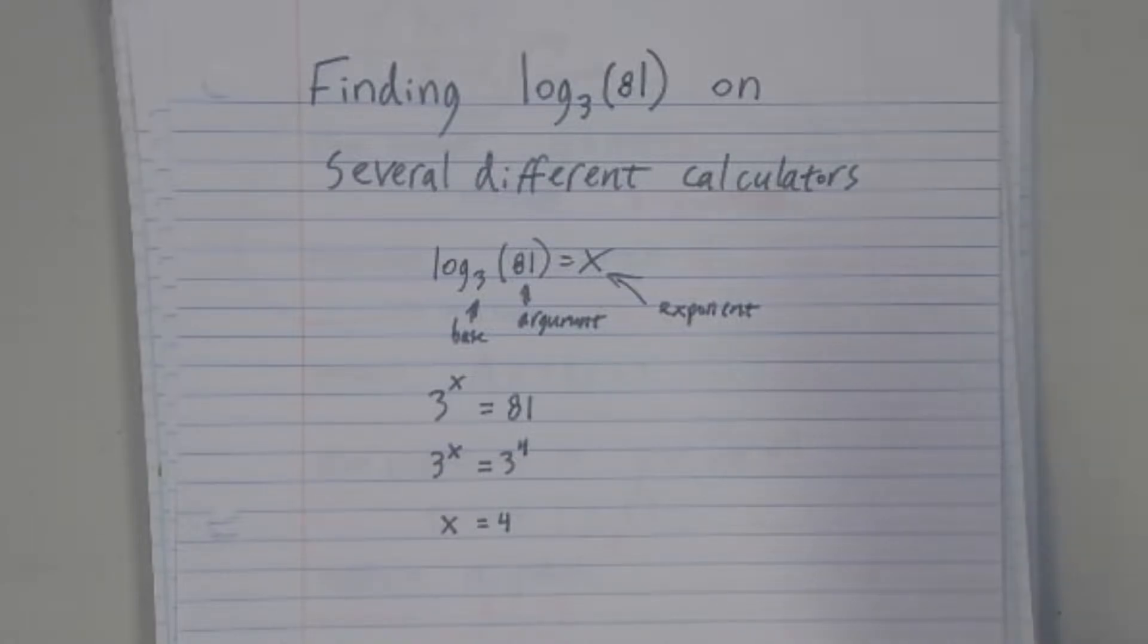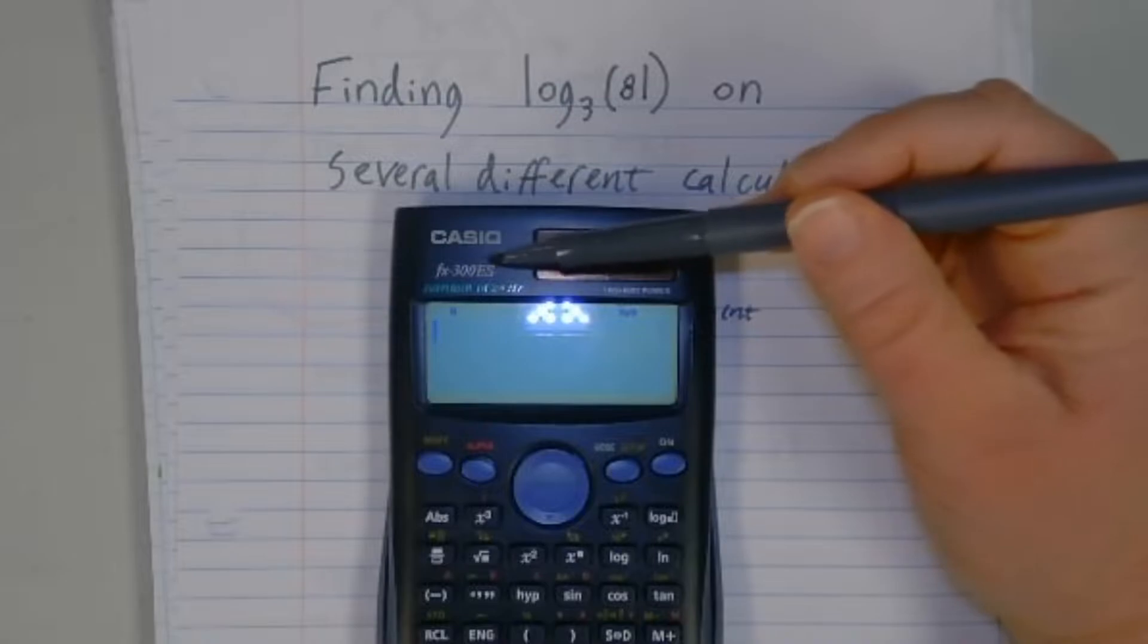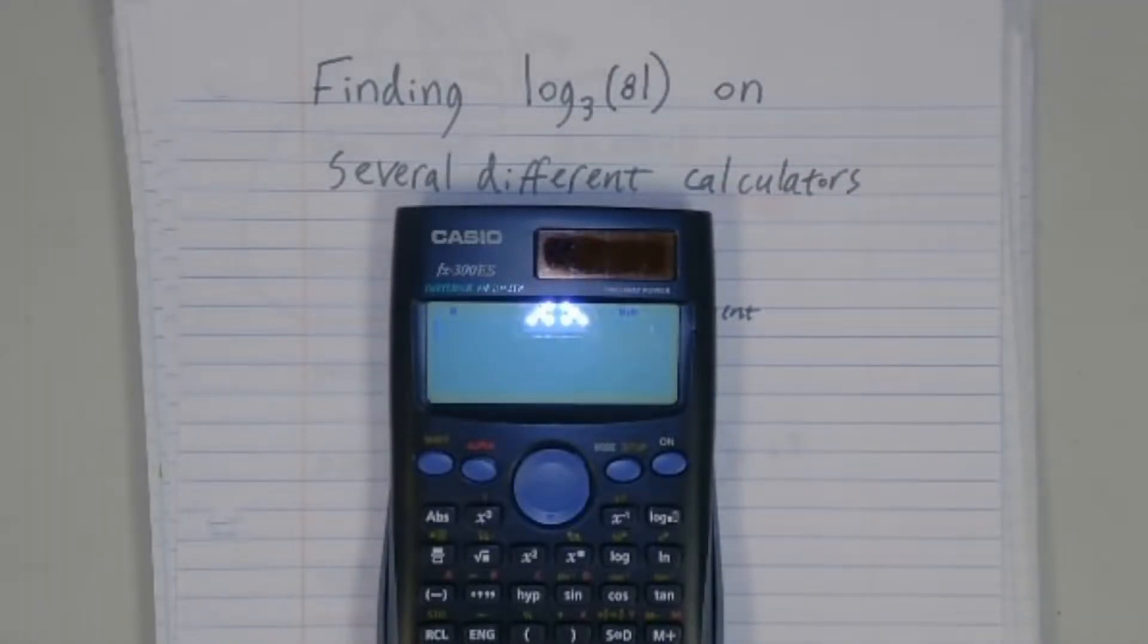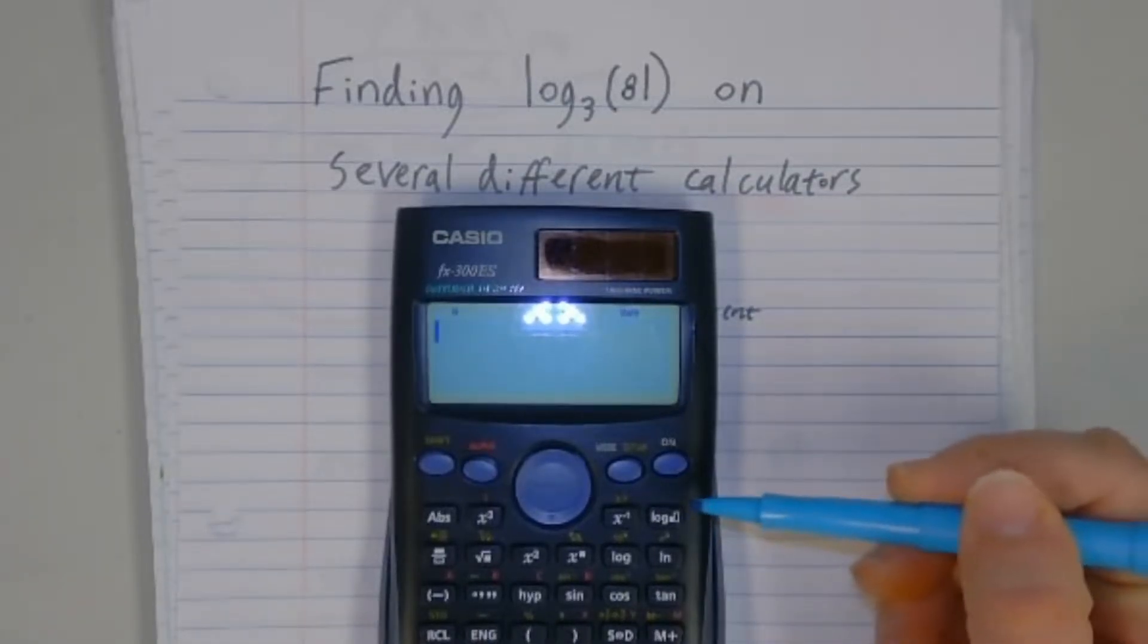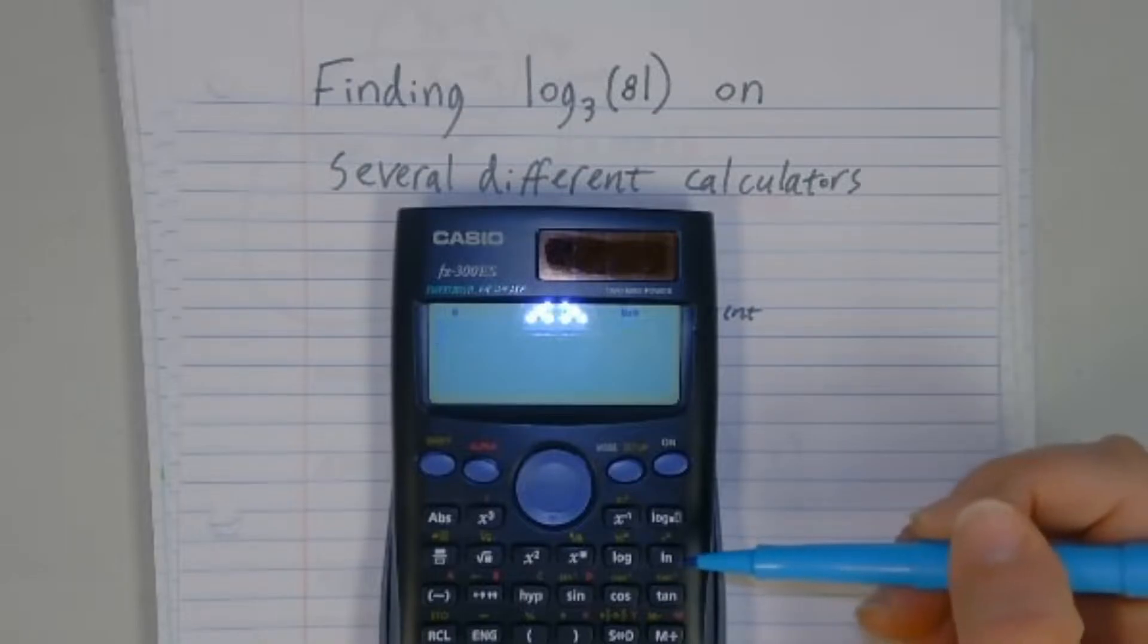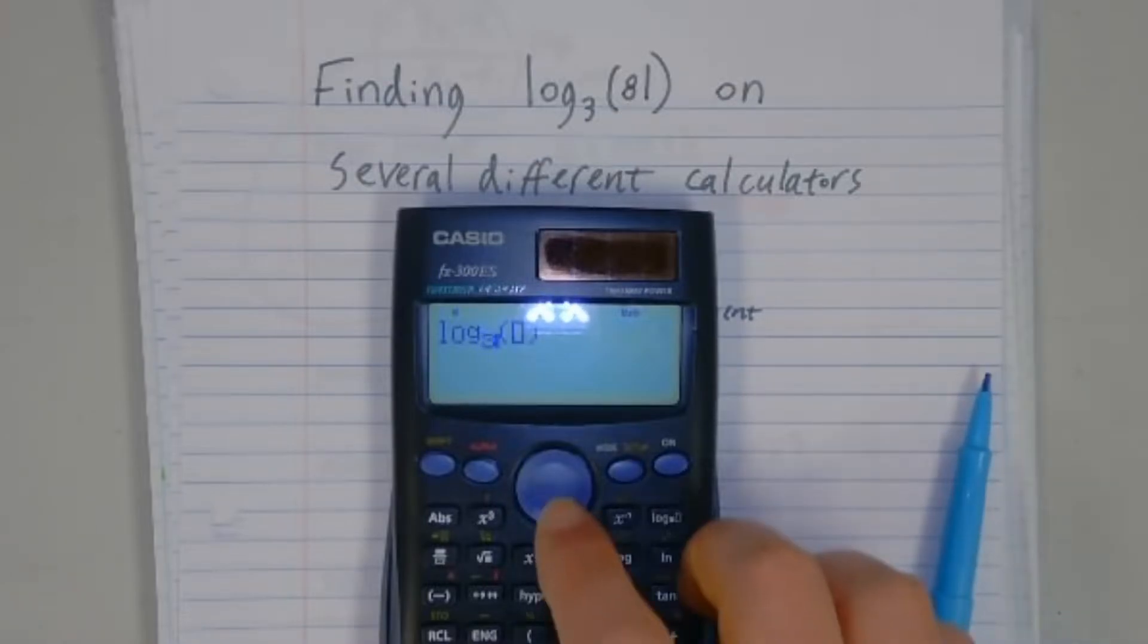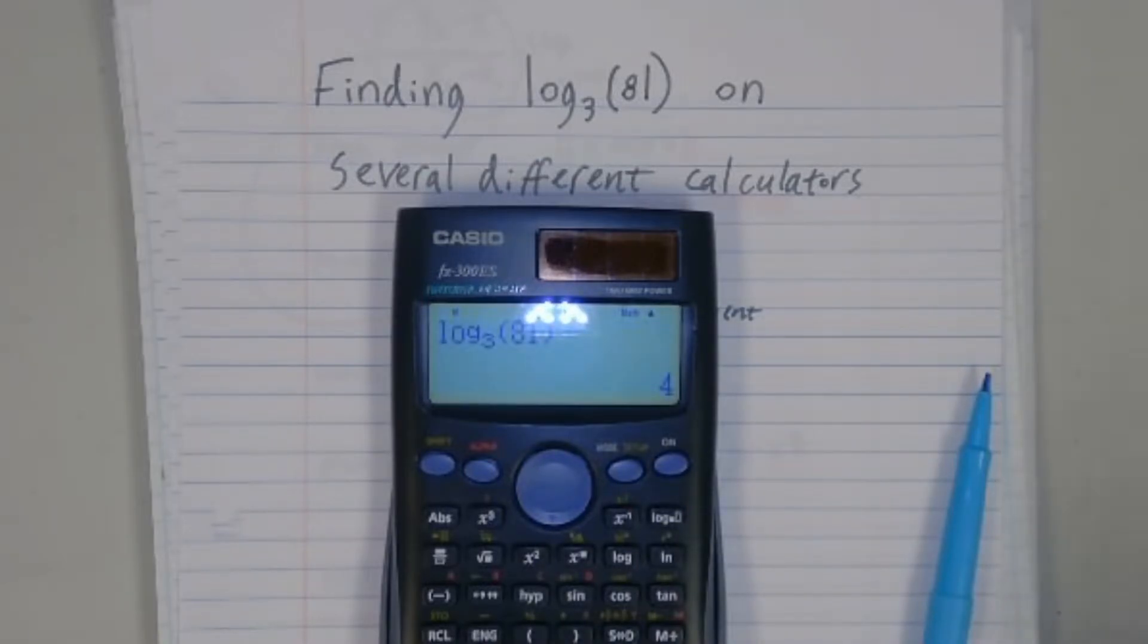So first, I'm going to show you on this Casio. It is an FX-300ES. And this Casio actually has a button right up here for a log to an arbitrary base. It also has a regular base 10 button and a base E button for natural log. But it actually has a button here with a little frame for both the base and the argument. So if I type that in, it gives me two blanks to fill in. And I can simply type in 3 and 81, and it'll give me 4. So this is easy mode.